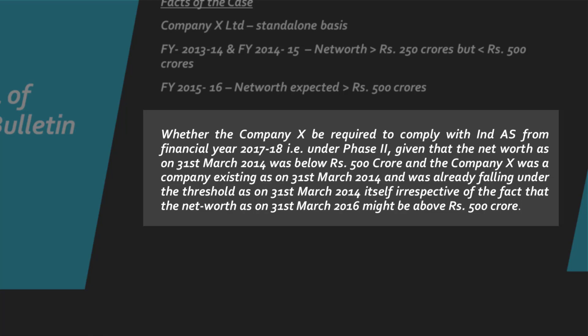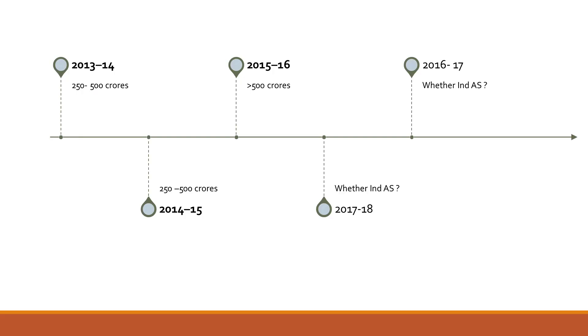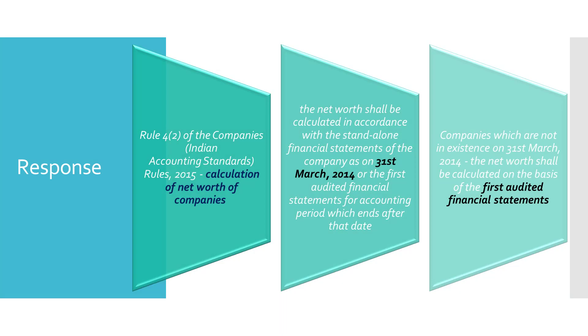This is given that the net worth as on March 31, 2014 was below rupees 500 crores, and the company was already in existence as on March 31, 2014, and was falling under that threshold on that date — irrespective of the fact that the net worth as on March 31, 2016 might be above rupees 500 crores. So how is this issue being dealt with under the ITFG committee? They refer to the rules and laws, provide their own explanation, and arrive at a conclusion.